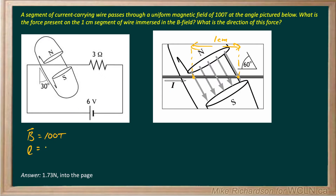We know L is 1 cm, and we need that in meters. We also need the value of the current in order to find force. The equation for force on a current-carrying wire in an external magnetic field is F = B × I × L. B is given, L is given, so we've got to figure out I.